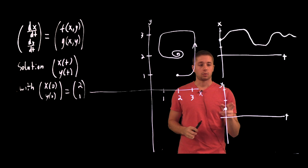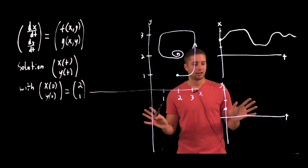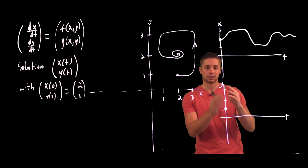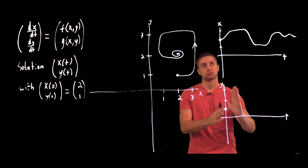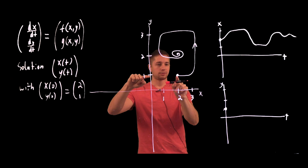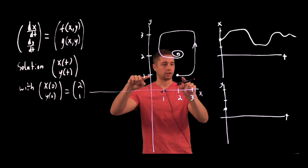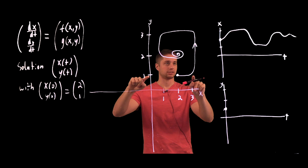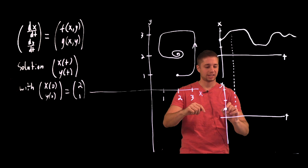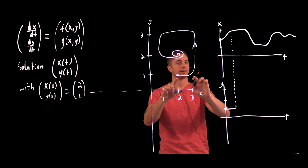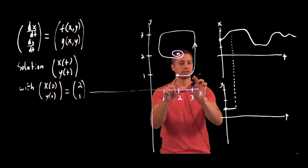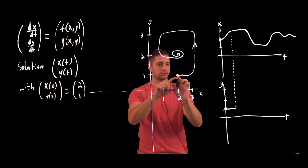Next we want to do this for the y of t graph. While I can't put numbers on the t-axis, I can make sure that events that occur to the y-coordinate occur at the correct times relative to events in the x-coordinate. We start at y equals 1. For a little bit, we're just moving to the right when you turn on time, which means the y-coordinate stays roughly constant — and that happens for roughly the same amount of time that x spends increasing before it levels off. So y stays constant at 1 during that first chunk of time.